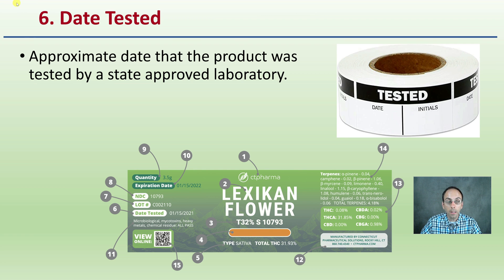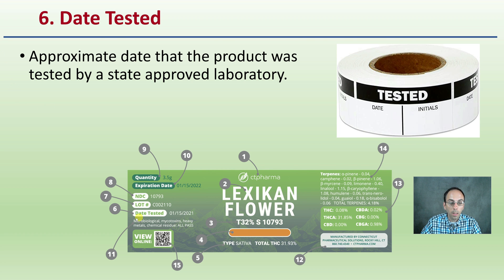Going to number six, we have the date tested. This is the approximate date that the product was tested by a state-approved laboratory. We can see it listed here with the month, the day, followed by the year.